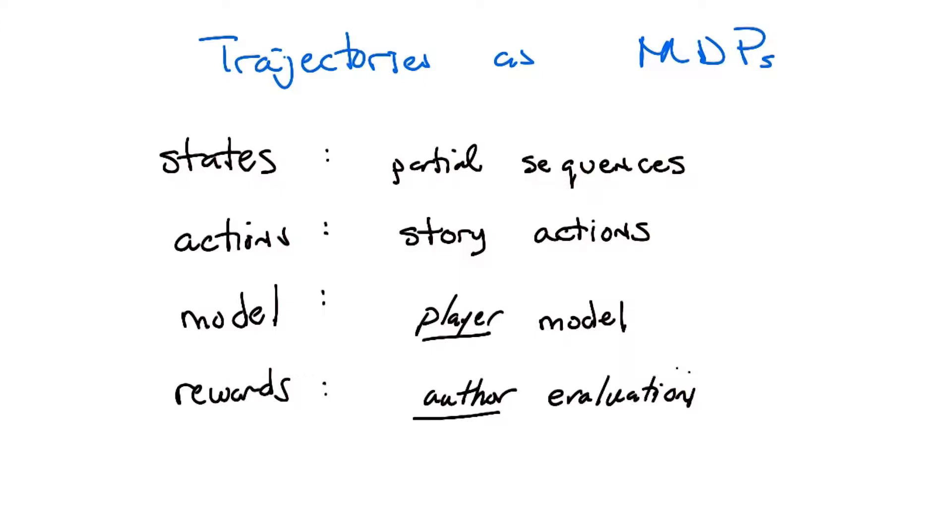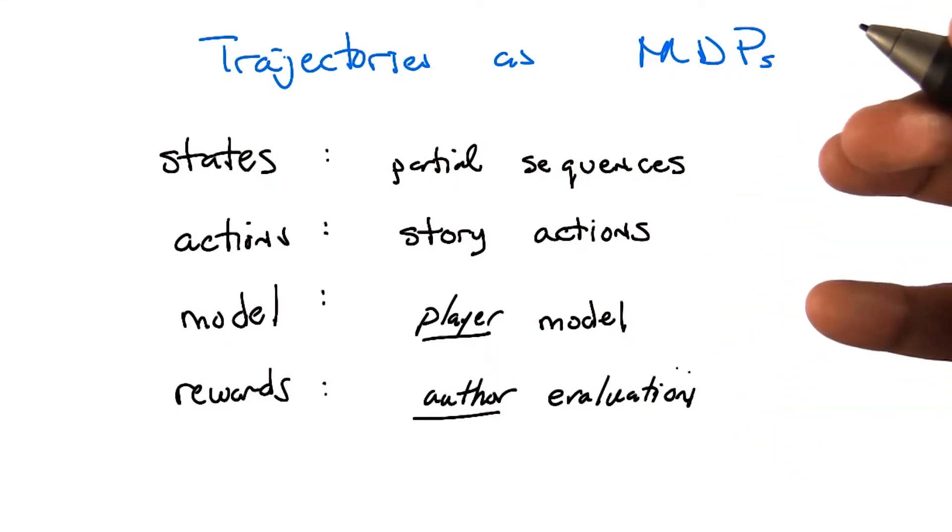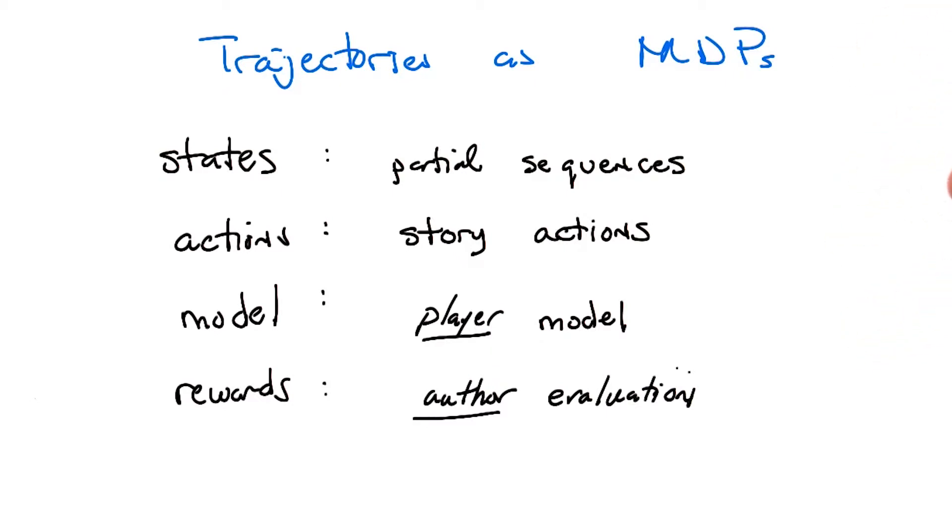Your model is still the same model that we're using before, except it's a player model. That means we've seen a sequence of states, or we've seen these trajectories, some action is being taken. And I want to know what plot state we're likely to be in, given that the player is doing something. So it still looks just like a transition model.